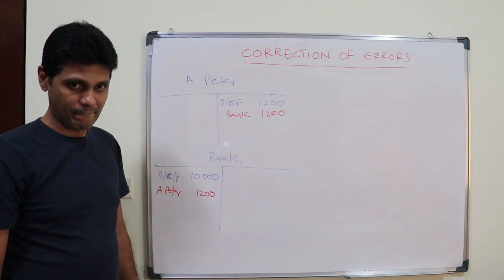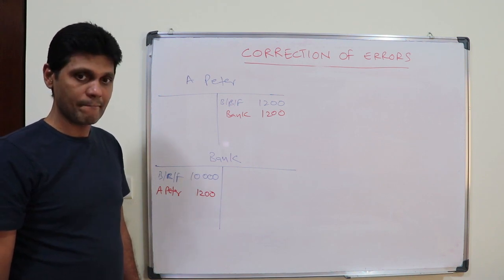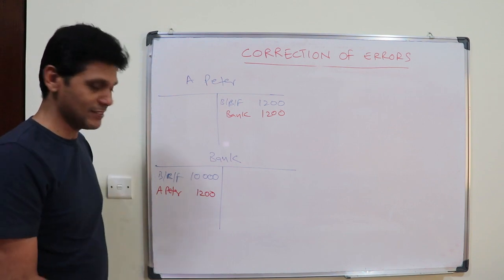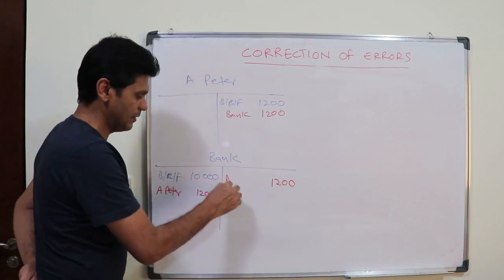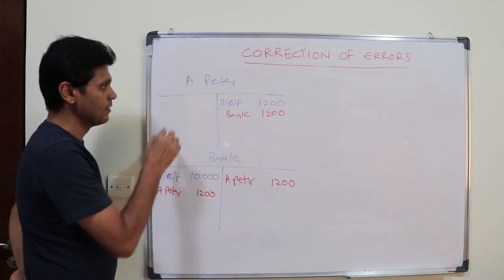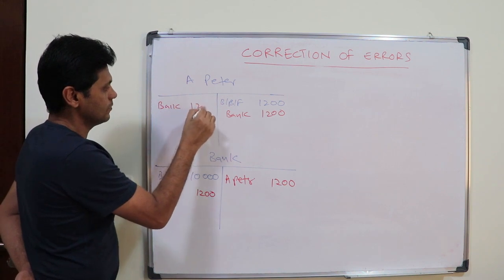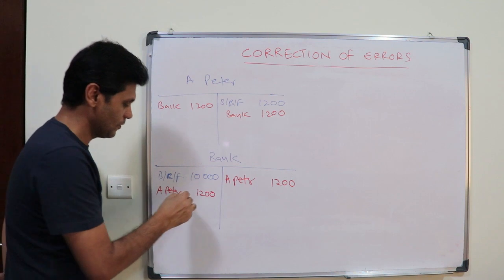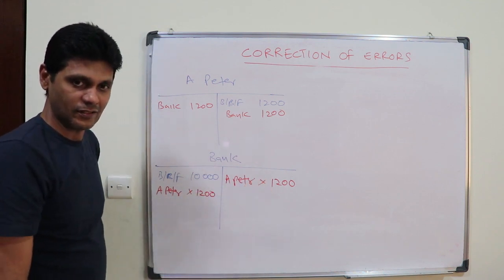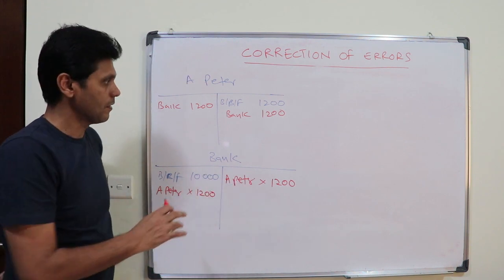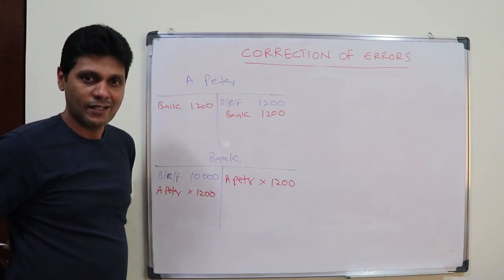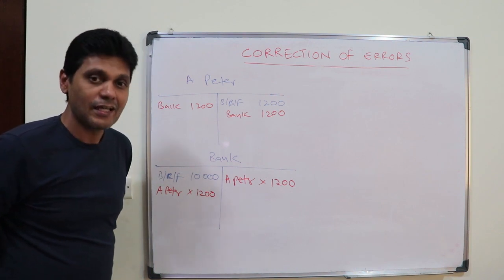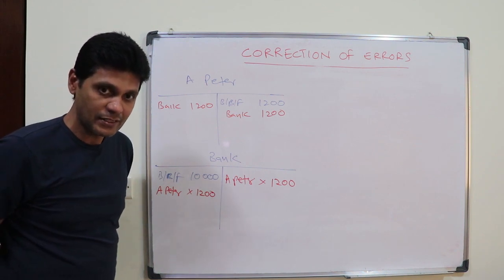To rectify this: debit A Peter one thousand two hundred and credit the bank one thousand two hundred. So this is the entry: A Peter's account — bank one thousand two hundred. This error entry will cancel down. But there is still an outstanding balance, so you need to pass the entry again.